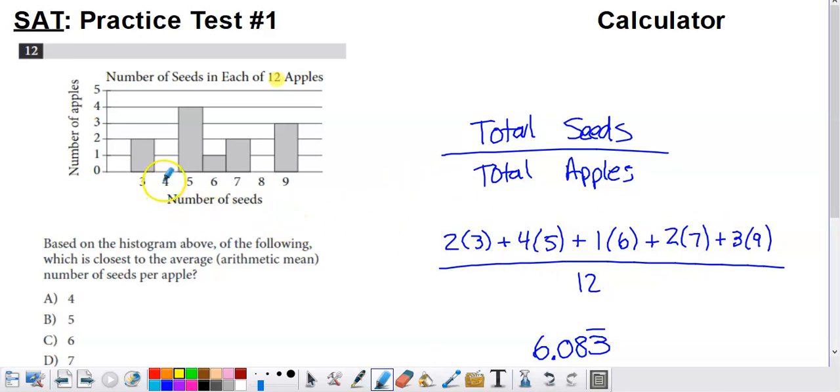If I had two apples with three seeds, to figure out the total number of seeds from this portion of the histogram, I'm going to have to take the two apples times the three seeds. There were six total seeds in those two apples.